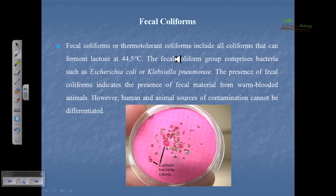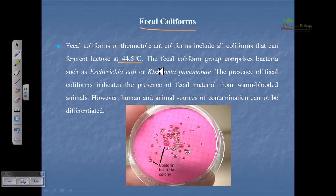Fecal coliforms can grow at higher mesophilic conditions — around 44.5 to 50°C — which is slightly higher than the growth range of total coliforms. Observable growth can be found after 24 hours. Fecal coliforms generally consist of Escherichia coli or Klebsiella pneumoniae, both of which can be pathogenic. Klebsiella pneumoniae can cause pneumonia, and a few strains of E. coli — about five or six — can cause gastroenteric diseases.